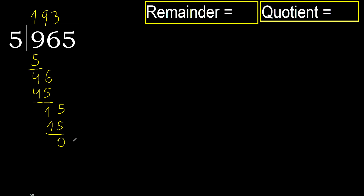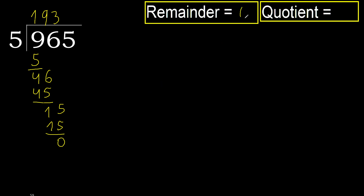That is not a number, therefore finish it. 965 divided by 5 is 193.